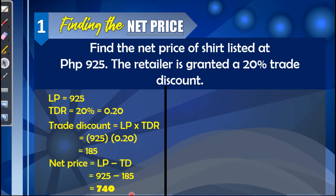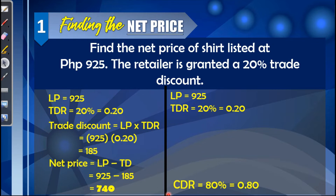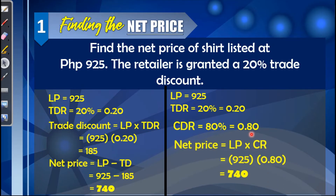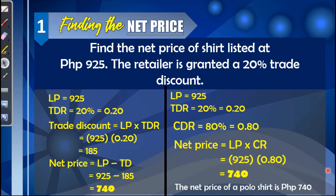Now let us show the second method using the complement method. First, we need to find the complement discount rate — simply subtract 20% from 100%, which gives us 80% or 0.80. After this, we find the net price by multiplying the list price by the complement rate: 925 × 0.80 = 740. We get the same answer, so the net price of the polo shirt is 740 pesos. You may use either the discount method or the complement method.